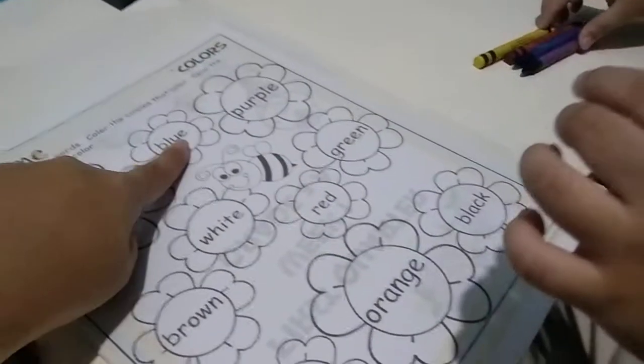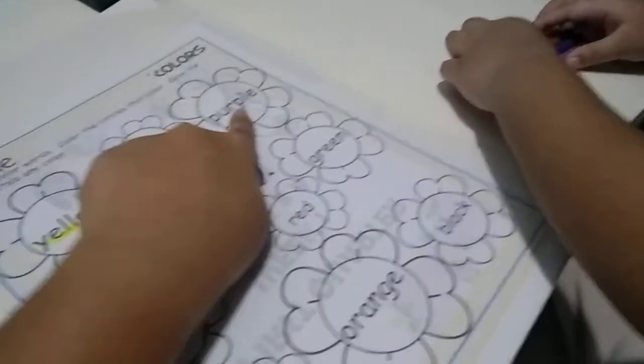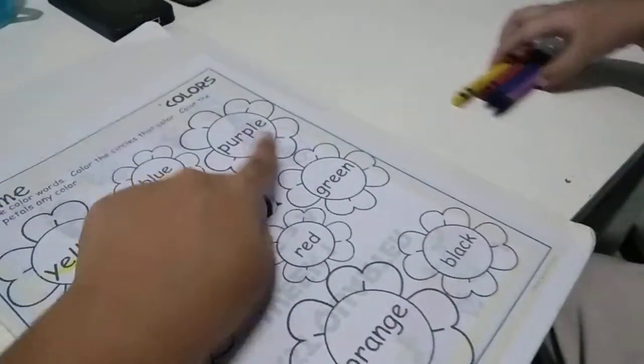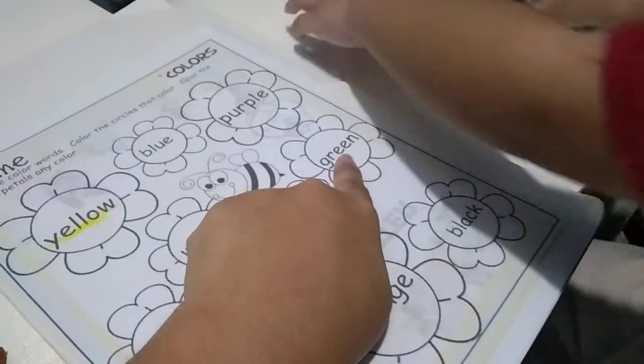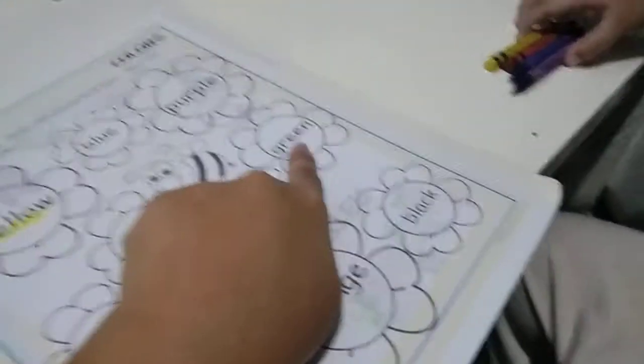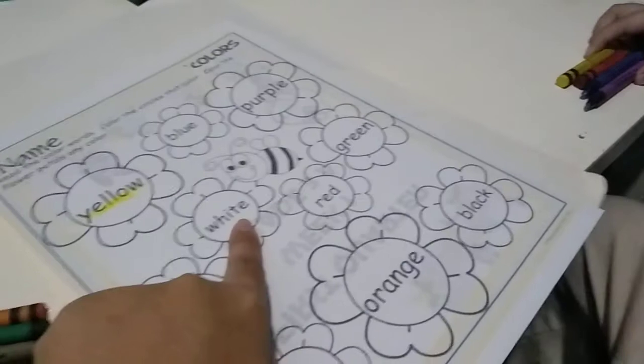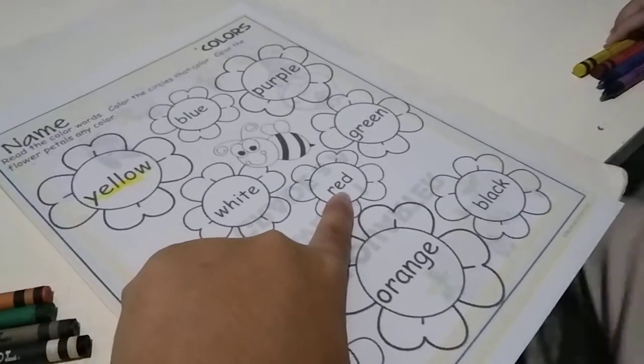You read this first. Blue. This one. Purple. This one. Read. Green, white, red.